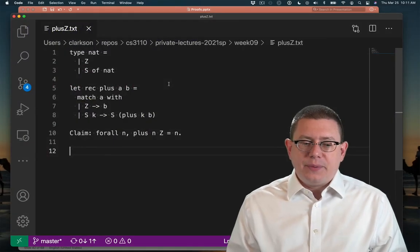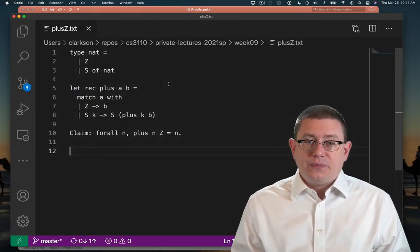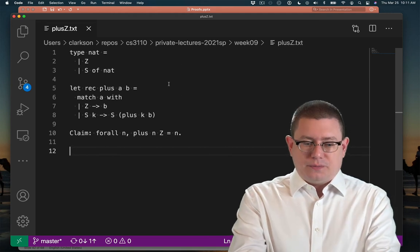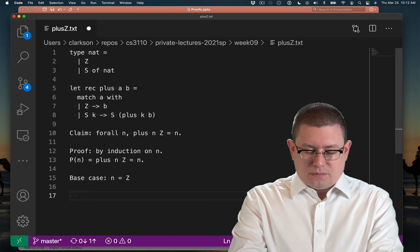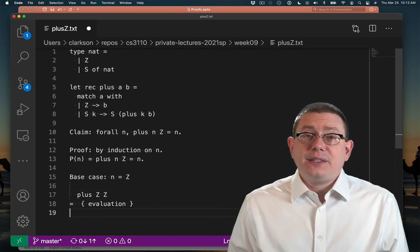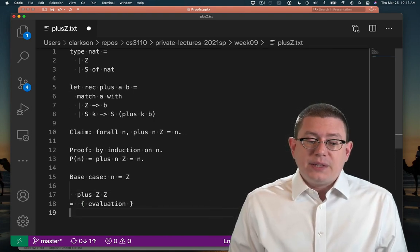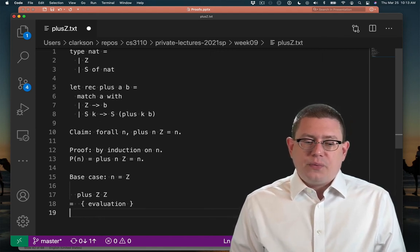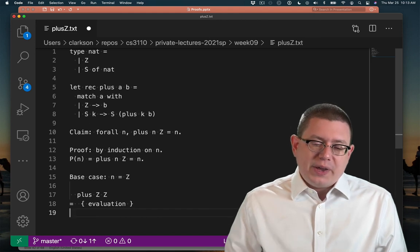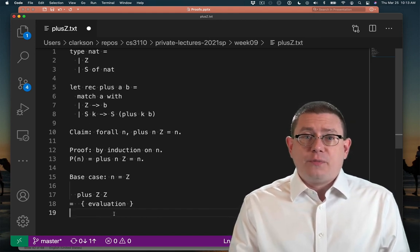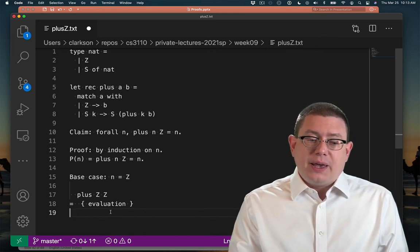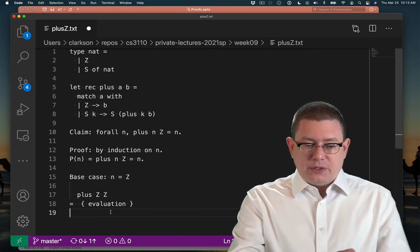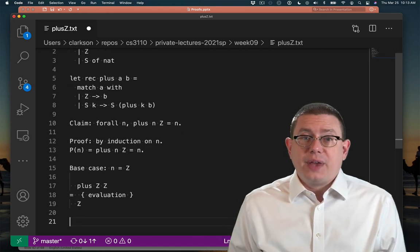I've put the code for nat and plus in here and the claim that we're trying to show. We're going to do this by induction. The base case is really easy. We instantiate that property P on Z. So we're trying to show that plus ZZ equals Z. Well, we can take just one step of evaluation of plus Z. That, of course, pattern matches on its first argument and returns its second argument. So we know that that evaluates to Z and we're done with that case.